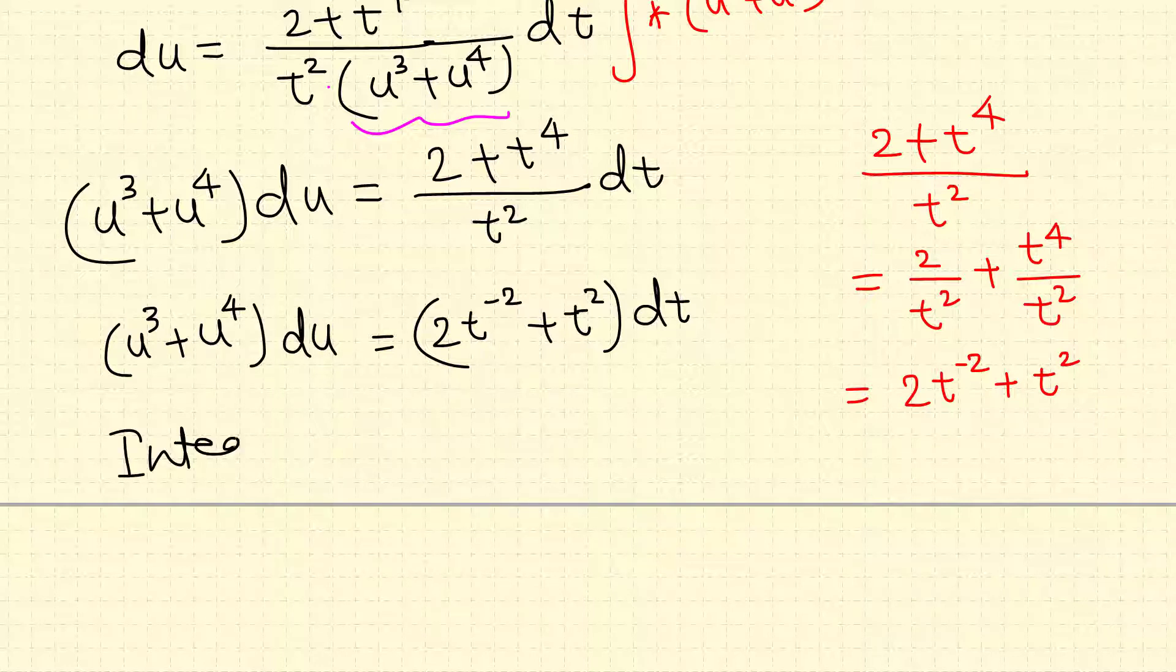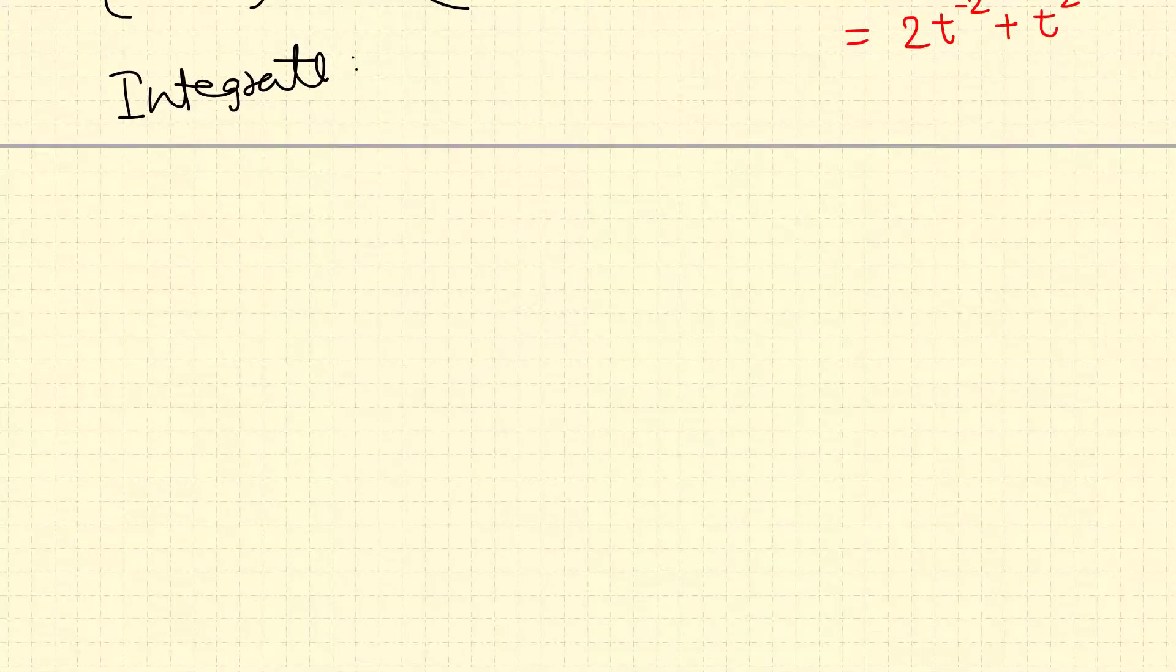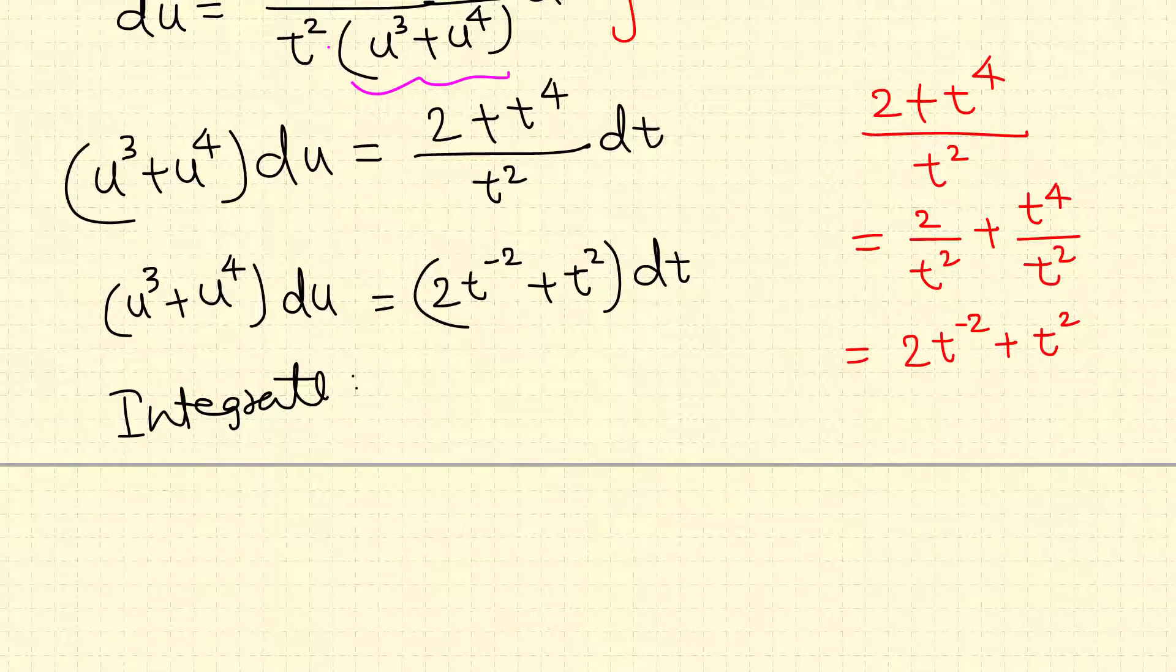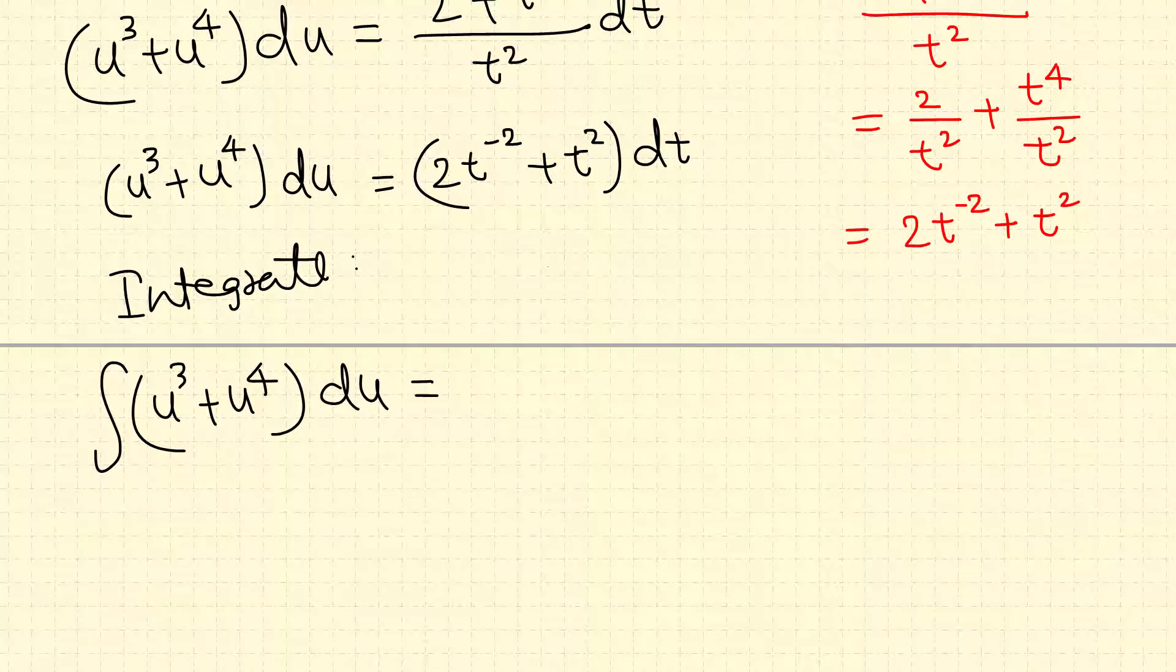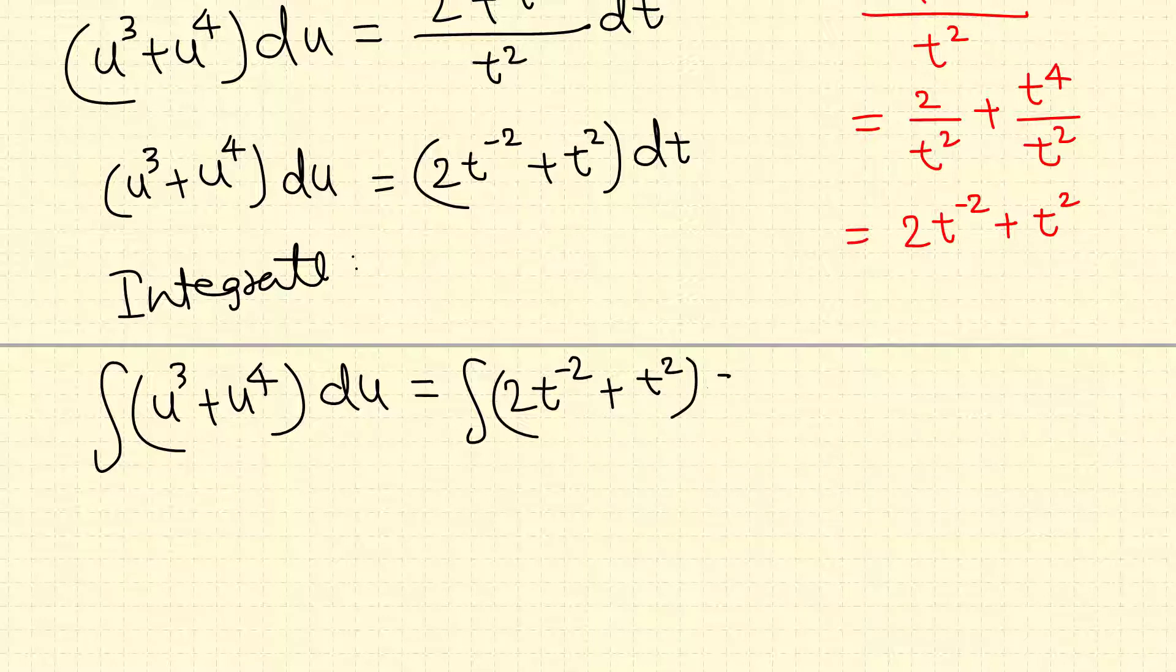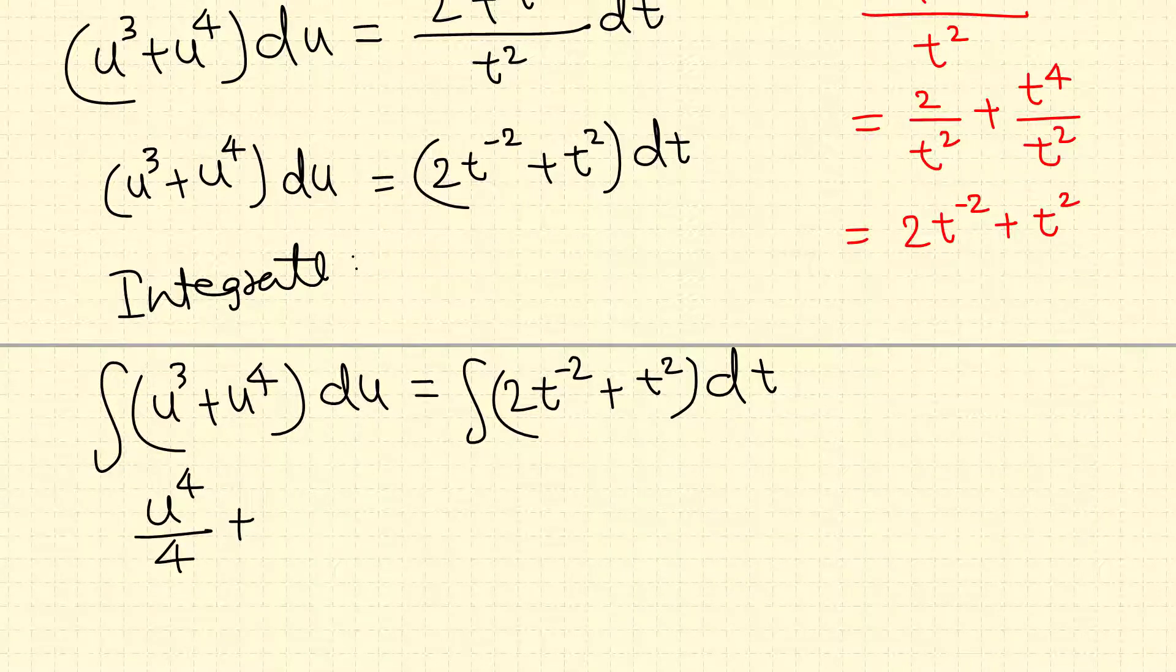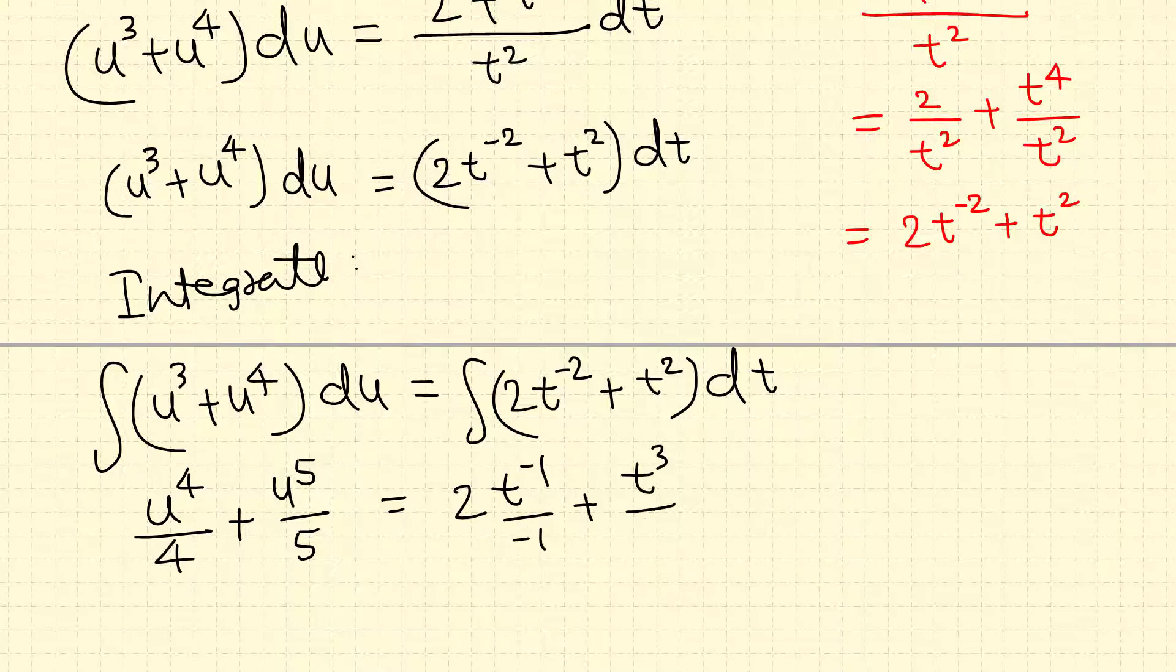In the left side we got u^3 plus u to the fourth du. Now integrate both sides. The antiderivative of left side we can finish using the power rule. Here again we can use the power rule: 2t to the negative 2, t squared dt. So when we integrate that's u^4 over 4 plus u^5 over 5, plus c. We just write one c on the other side.